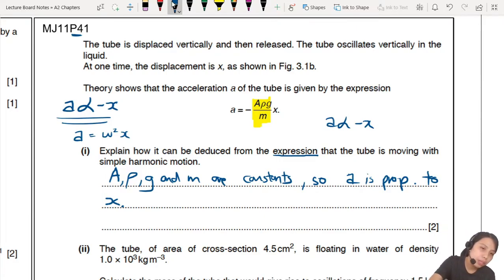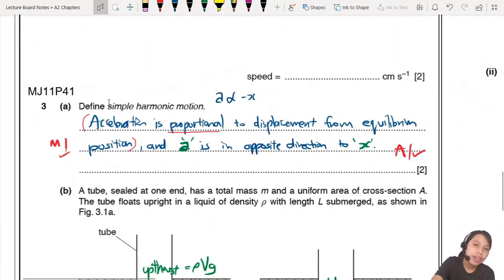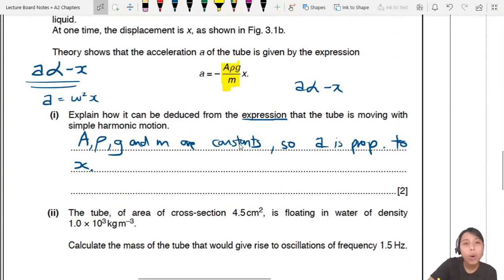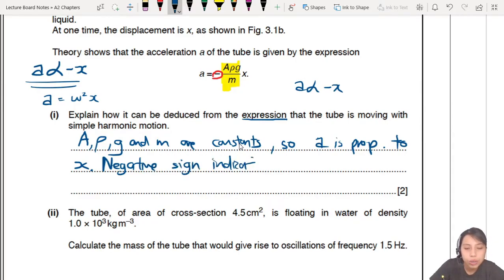Where's the other mark from? Remember, simple harmonic motion, what's the definition? There's two key points. Proportionality and the direction of acceleration. So you must also say, because we have a negative sign here, right? So confirm this one is simple harmonic motion. And you can say the negative sign will tell you that what and what is in opposite direction. Displacement and acceleration is in opposite direction. This is the answer that will get you all the full marks.